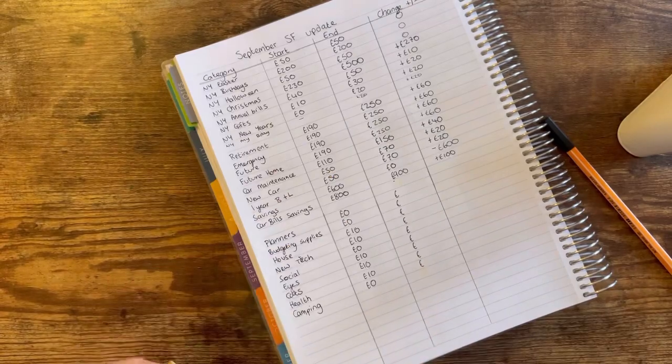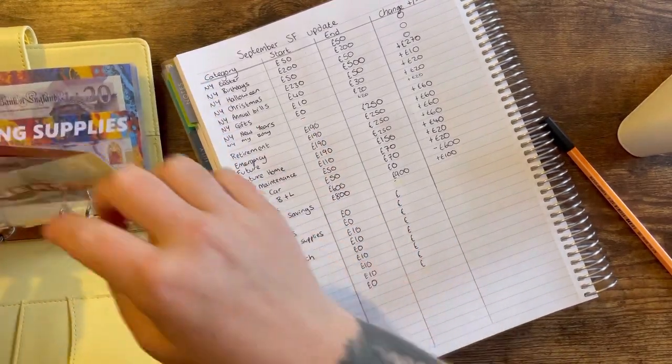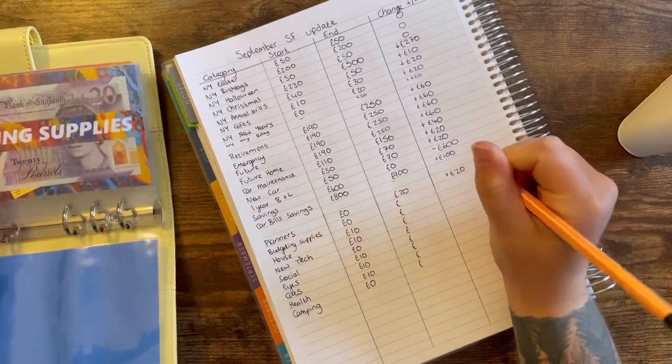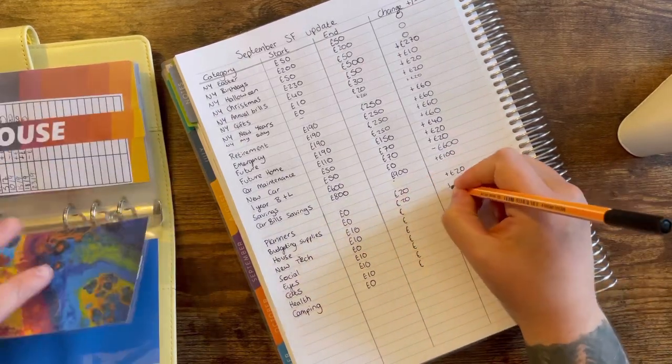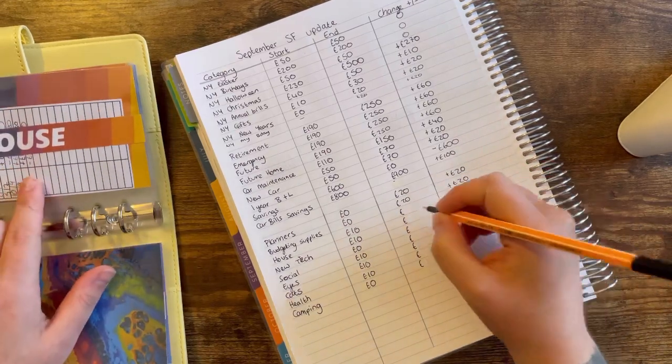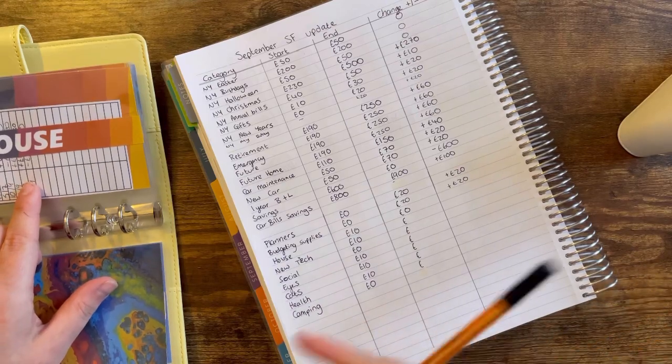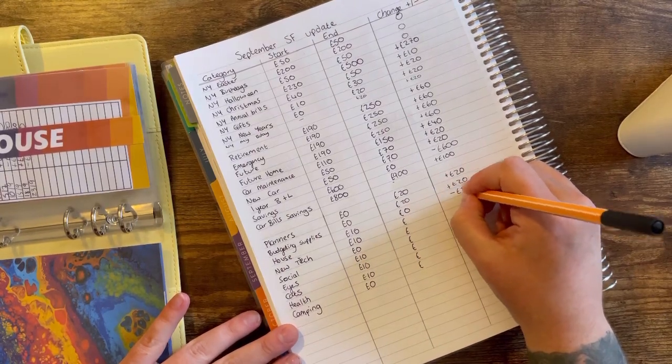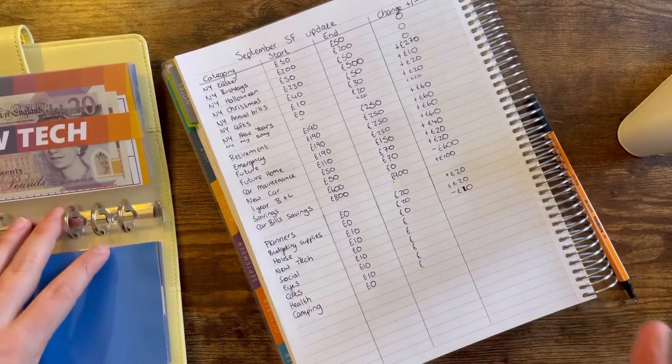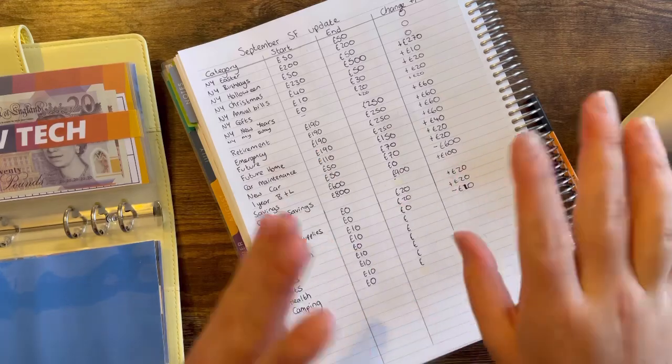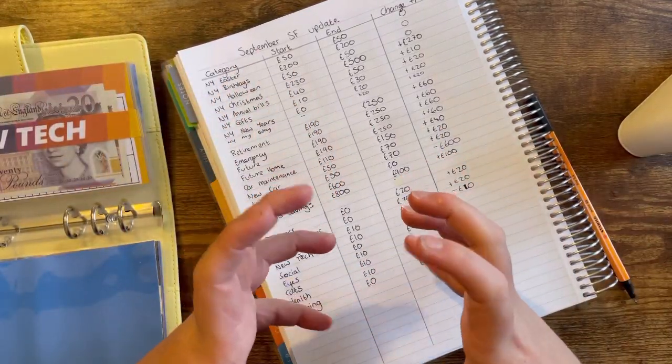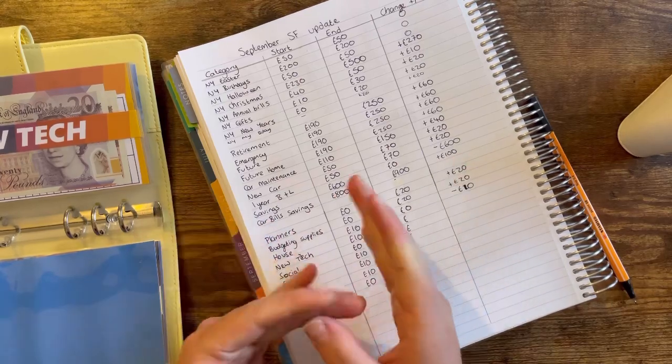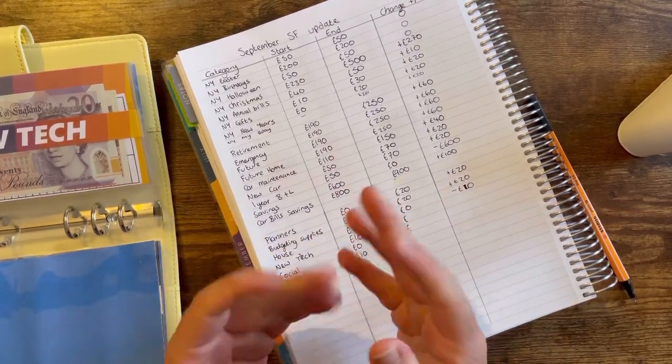Moving on now to my short-term sinking funds. Planners has 20 pounds, which is a positive change of 20. Budgeting supplies also has 20, which is a positive change of 20. House has nothing. I stuffed money and then I took it out, but obviously it doesn't show here at the end of month total, so that is just a negative 10. I bought a little blanket storage box for downstairs which looks really nice, and I've got pumpkin pillows because it's fall and autumn and pumpkin season. All my blankets and my hoodie were piled on my sofa and I had no room to actually sit down, but now I do so that's great.